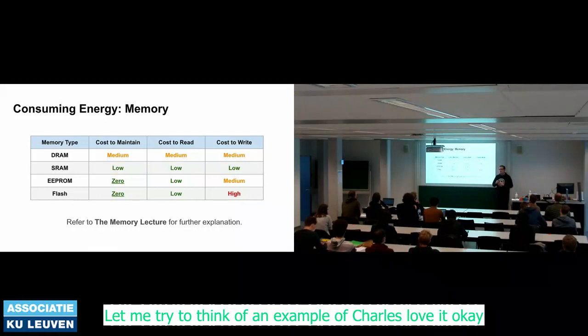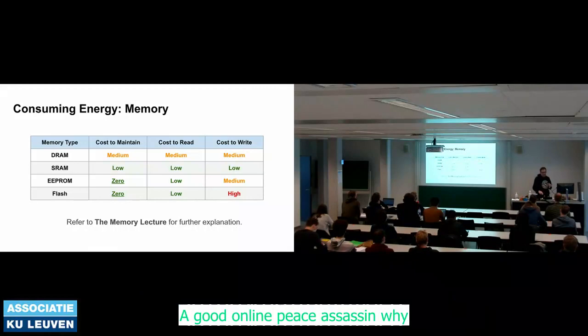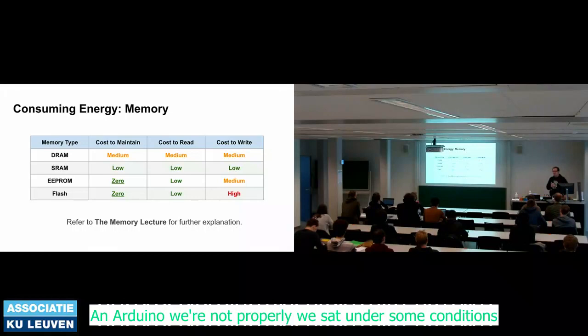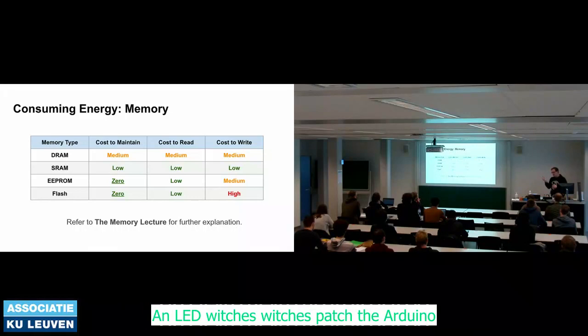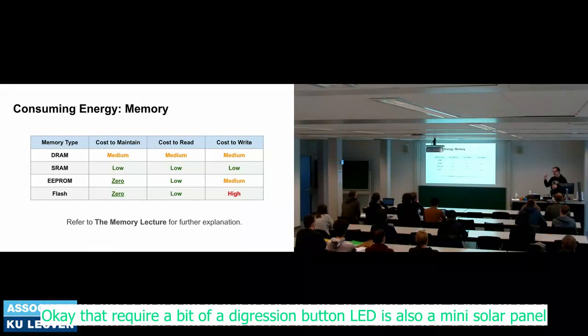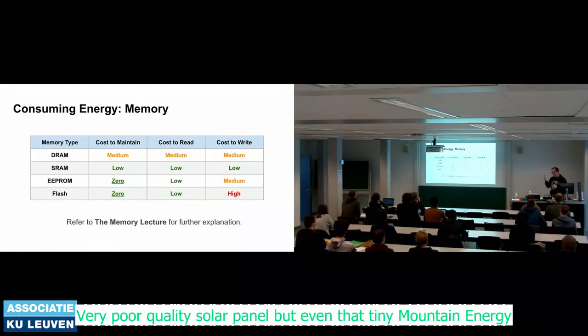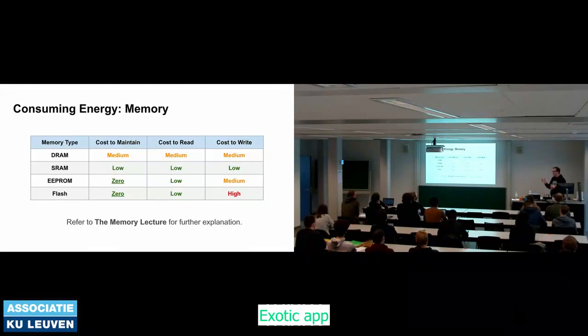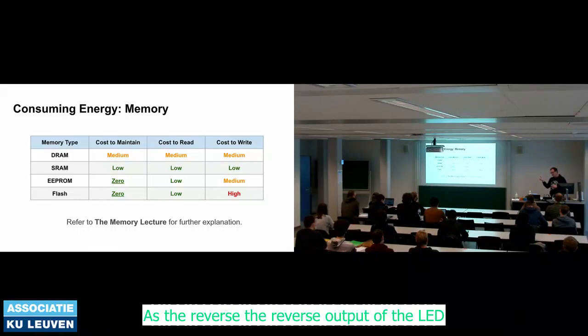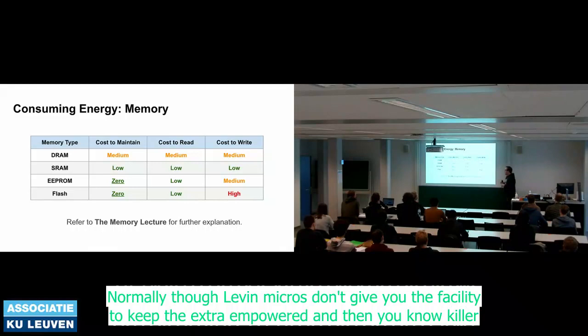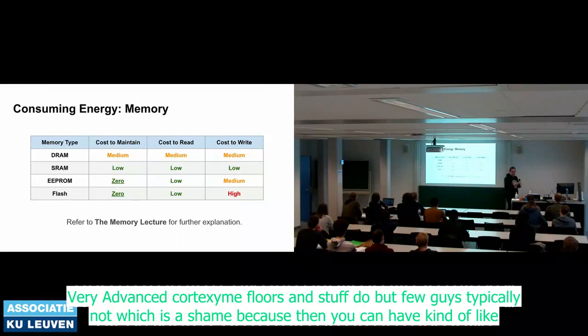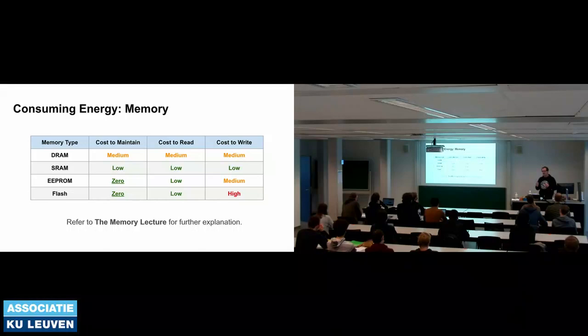An interesting example: even when an Arduino is unplugged, an LED attached to it was sufficient to keep the SRAM active — because an LED is also a mini solar panel. Even that tiny amount of energy from reversed LED output under normal light could keep SRAM going. Unfortunately most low-end micros don't give you the facility to keep SRAM powered while killing the rest of the system — some advanced Cortex-M4s do — which is a shame, because you could have instant restart and persist/restore registers.